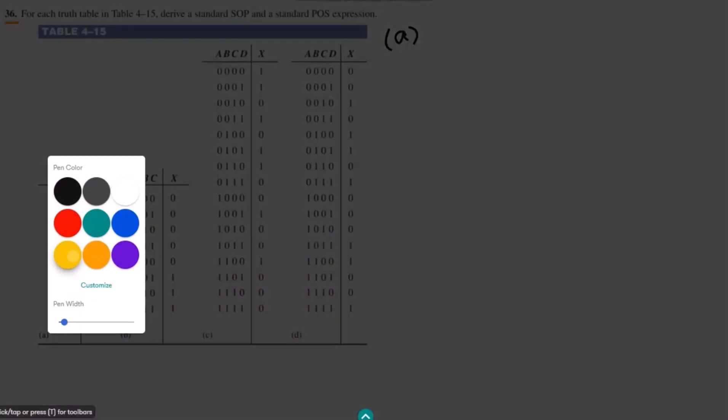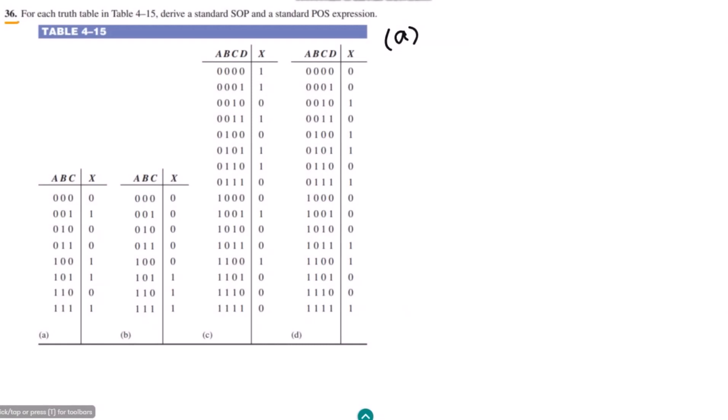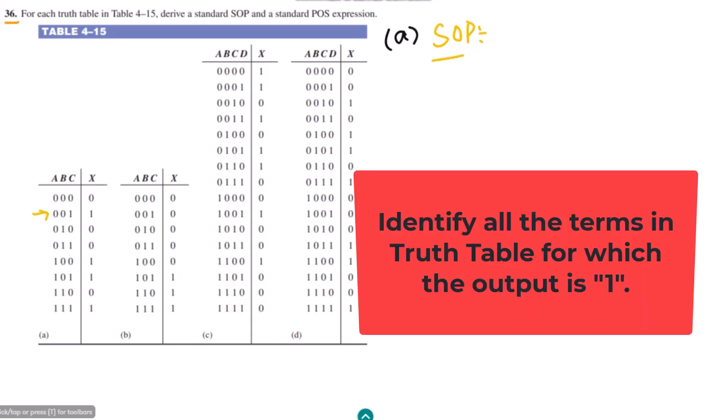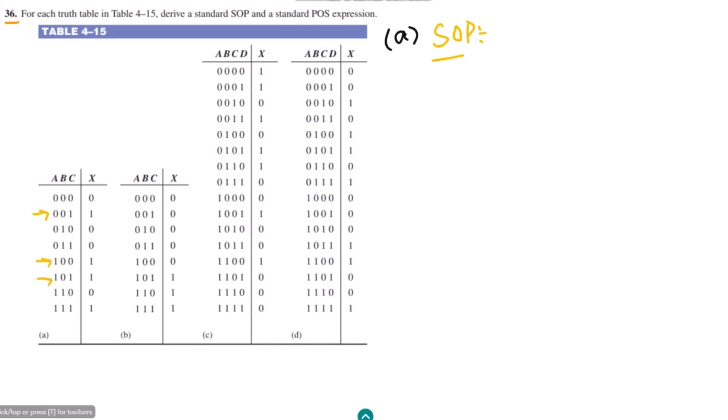In part A, before finding the SOP sum of product terms, let us identify all the terms which are 1. The first term is here, the second one is here, the third one is here, and the fourth one is here. These are all the terms which are ones, and the domain for them is A, B, C. I have to multiply each of the terms such that I will get 1.